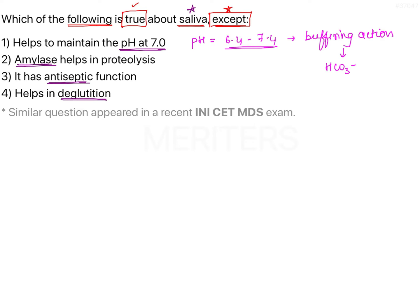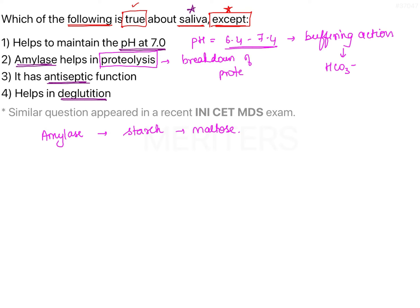The second option says amylase helps in proteolysis. Amylase is a digestive enzyme that plays an important role in digesting starch — breaking down starch into maltose. However, proteolysis denotes the breakdown of proteins, which is not what amylase does. Amylase is involved in carbohydrate digestion, not proteolysis. Therefore, option two is not a true statement and stands as the exception.